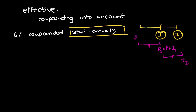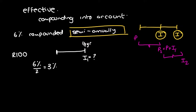Using a hundred grand as an example, invested for a year, we first work out the interest at the end of six months — call it I1. It's 6% per annum compounded semi-annually, but we only want half a year, so: 6% divided by 2 gives us 3%. The interest is 100 times 0.03 which equals 3 grand. So at the end of six months we get 3 grand interest on the 100 grand.